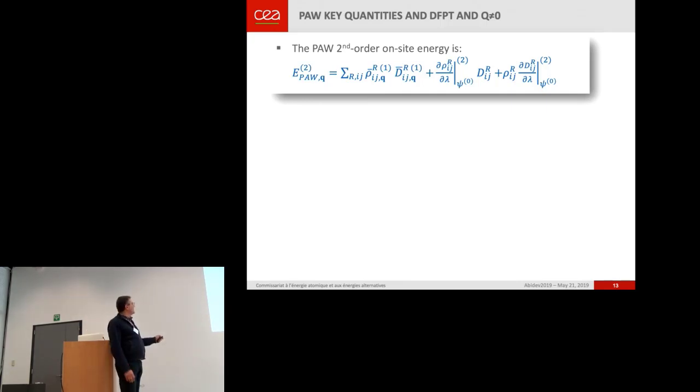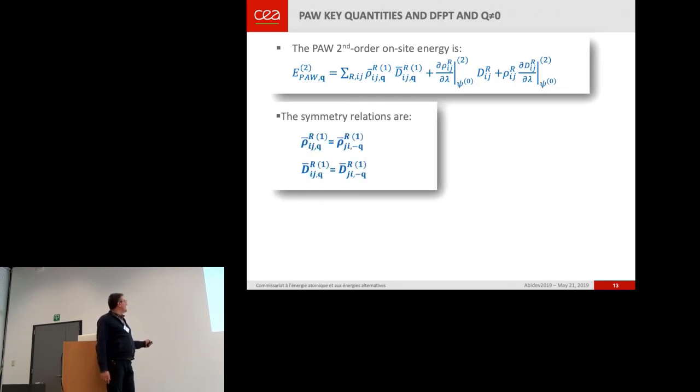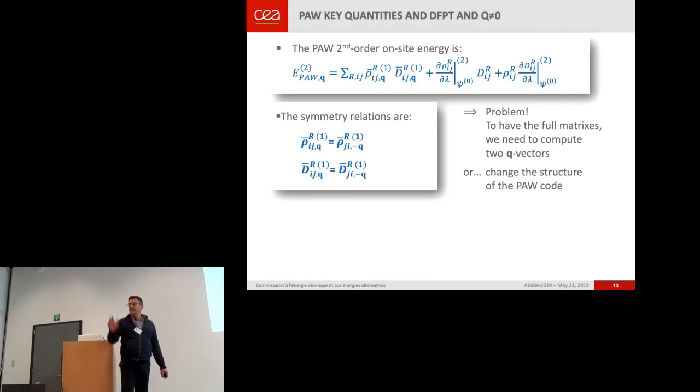So these two terms are not complicated to obtain. This one is complicated. It is no more real. But there are some symmetries for these two on-site terms. And you see you need two Q vectors to have the complete symmetry.